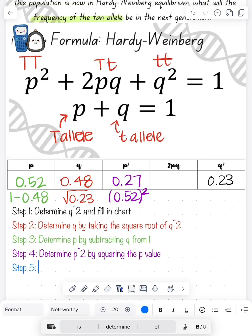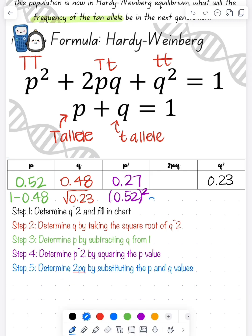And then to find our 2pq, our heterozygous, we'll just substitute in our p and our q into the equation. So it'll be 2 times 0.52 times 0.48, and that's going to give you 0.50.